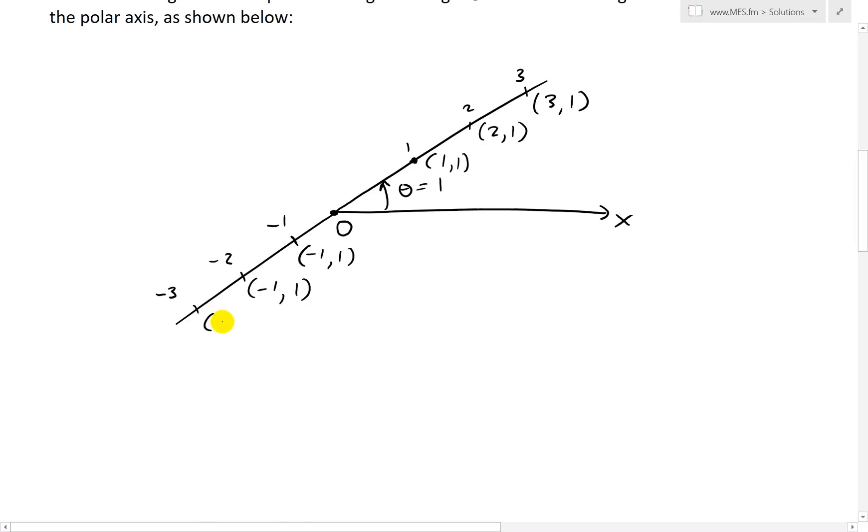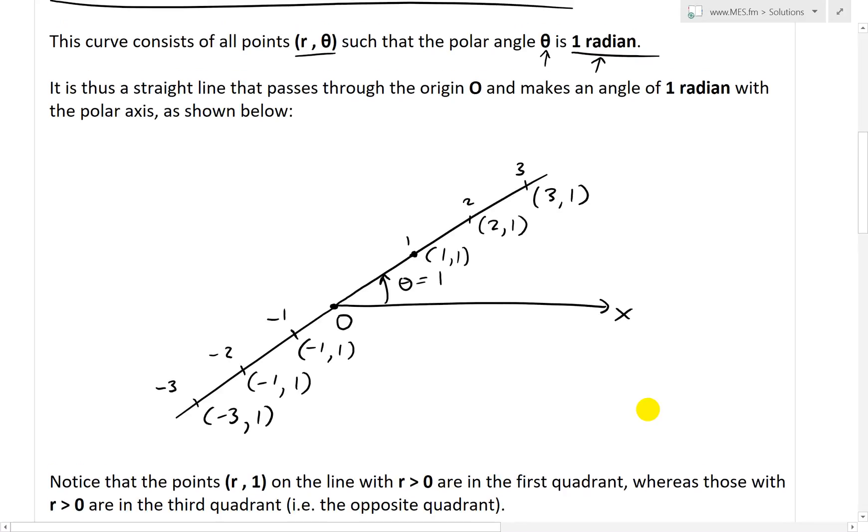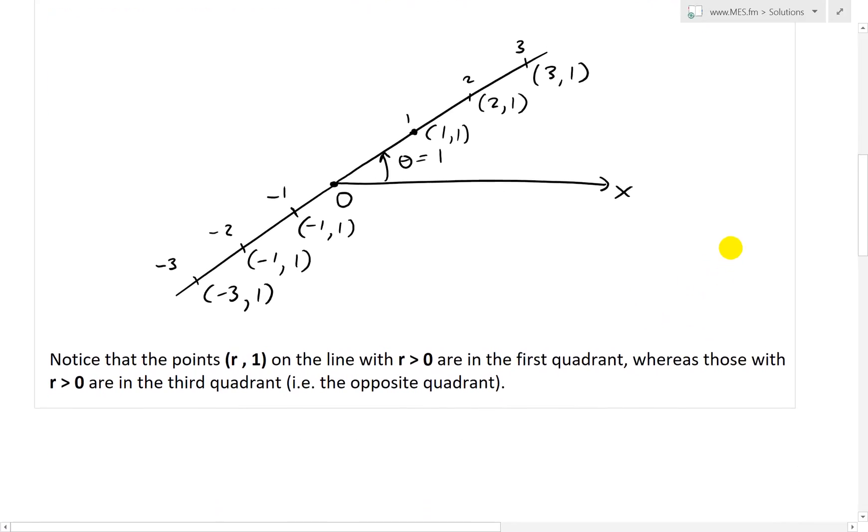Here's going to be negative 1 and 1. And here is going to be just like corresponds to that one, negative 3 and 1 over there. So what we end up having is just a straight line through the origin.